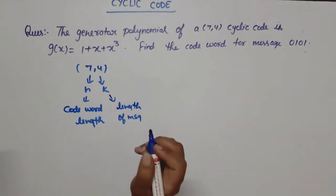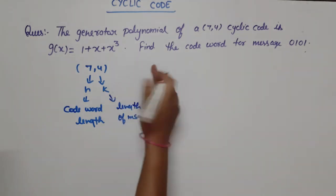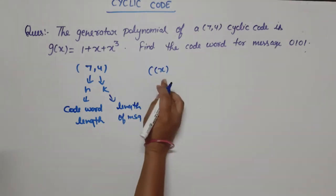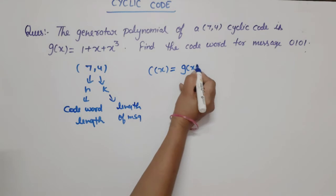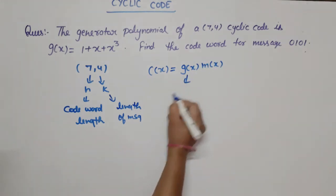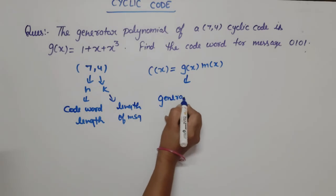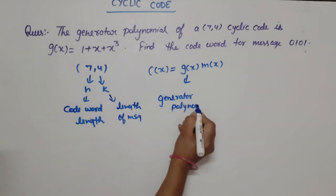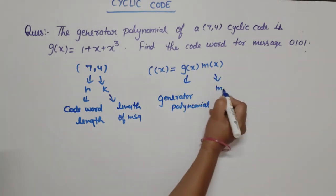Our codeword vector formula is C(x). In polynomial form, C(x) = g(x) · m(x). Here g(x) is the generator polynomial and m(x) is the message polynomial.